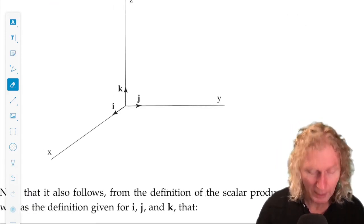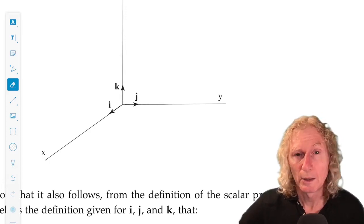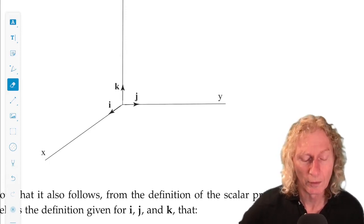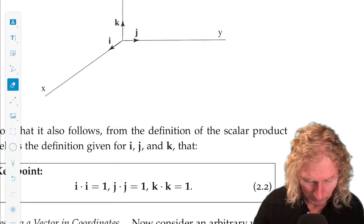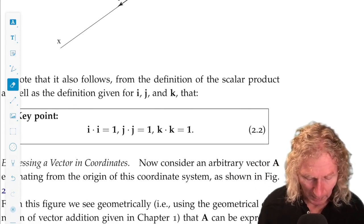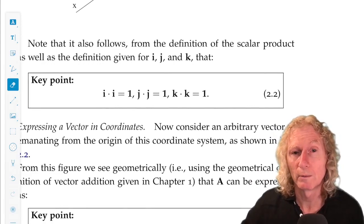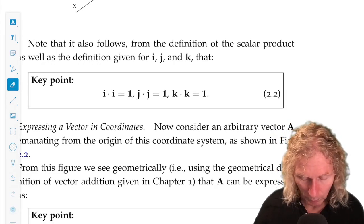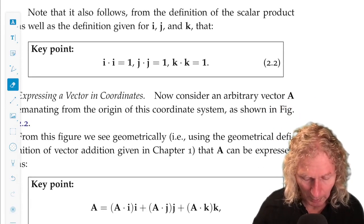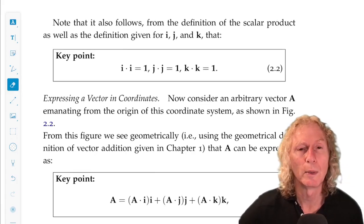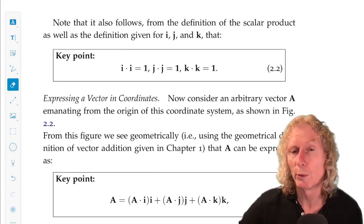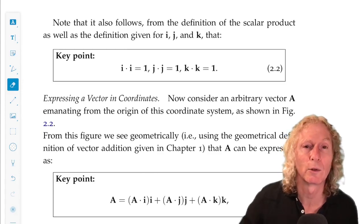So this is a right-handed rectangular Cartesian coordinate system. And the vectors are unit vectors, and so equation 2.2 is a representation of i, j, and k being unit vectors. We know they're mutually orthogonal, and they're of unit length.